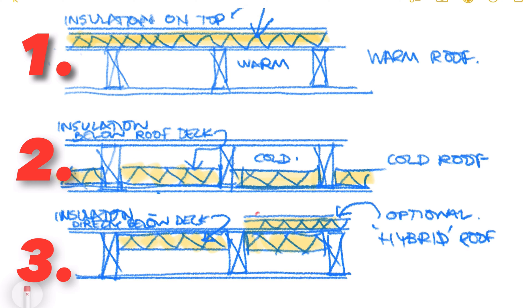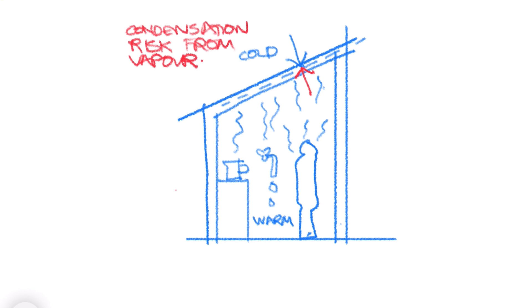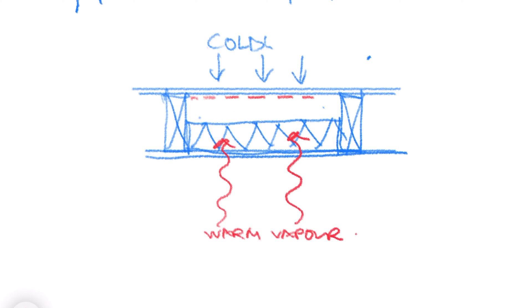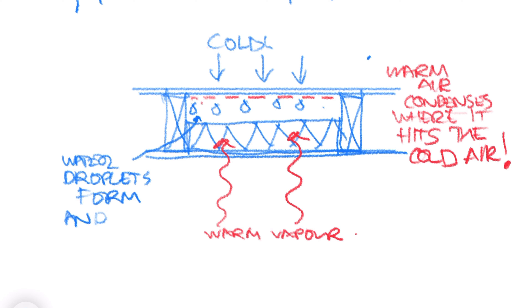Each of these insulation solutions will have slightly different ways to treat the vapor, but all of them need to take account of the point where this vapor and warm air meet the cold air from the outside, which we call the dew point. If that dew point happens inside the structure within the timber elements, you will get gradual rot of your roof deck as moisture is created within the void and dampness begins to take hold.